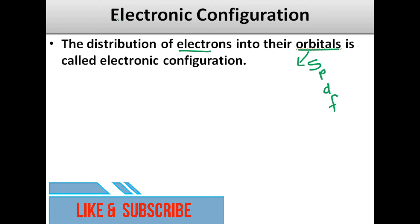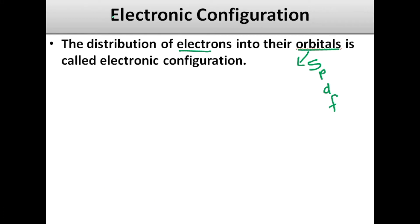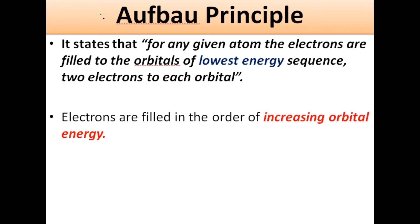Electronic configuration is a method of distribution of electrons into their orbitals. Electronic configuration is carried out by different rules. One of the most important principles is known as the Aufbau principle.